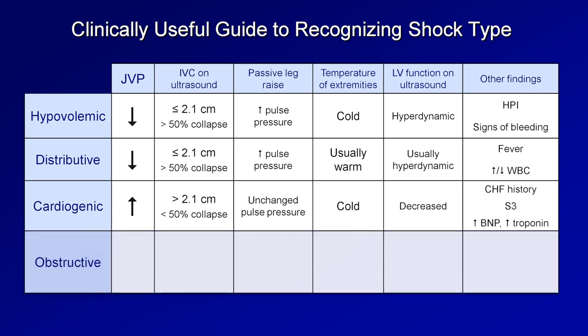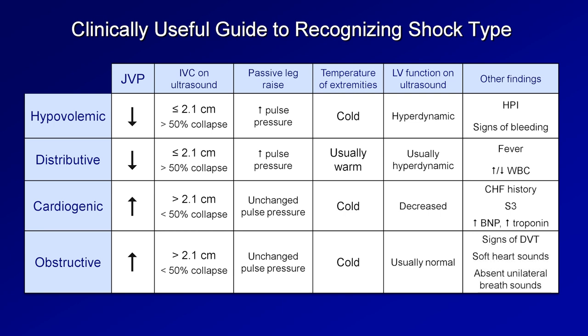In obstructive shock, these tests can look very similar to cardiogenic shock, with the exception that LV function most commonly looks normal. The key to diagnosing obstructive shock is looking for other findings — many visible with bedside ultrasound — in addition to physical findings of a DVT, soft heart sounds suggestive of pericardial effusion, and absent unilateral breath sounds suggestive of pneumothorax.